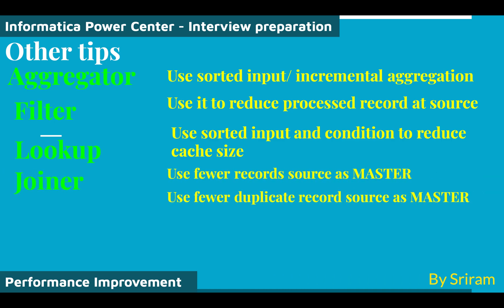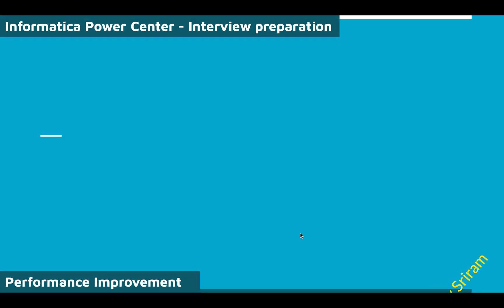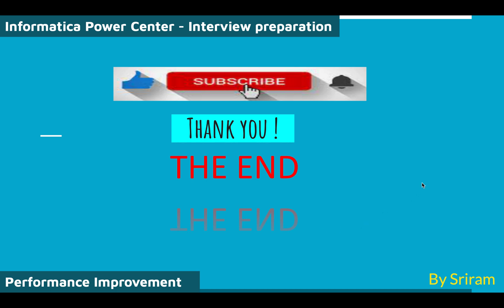For the Joiner transformation, use the source with fewer records as the master and use the source with fewer duplicate records as the master to reduce iterations and speed up the join. Sorted input can also be used. Note that if you are joining tables from the same database, it is better to use the source qualifier with an SQL override join rather than a Joiner transformation, as the database query will be faster. Apply filters within the source qualifier to reduce records early. That's it for this presentation — thank you for watching, and all the best!